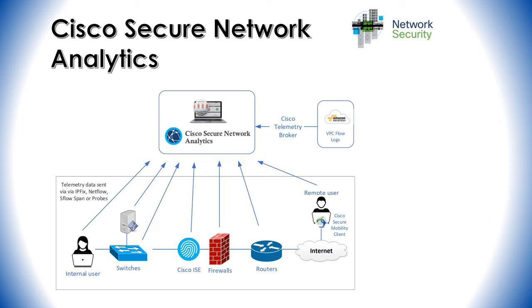This data is processed by sensors and collectors placed in different parts of the network. It can collect information from all these devices as long as you set them up to send flows to Cisco Secure Network Analytics. It can ingest data from Cisco IOS as well, and then feed back information about the user and device from firewalls, routers, switches, etc. — even remote users using the Cisco Secure Mobility Client, which can send data back to Cisco Secure Networks Analytics.